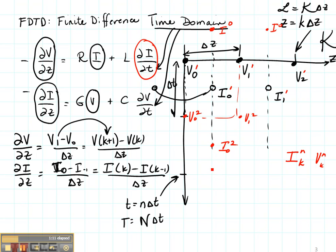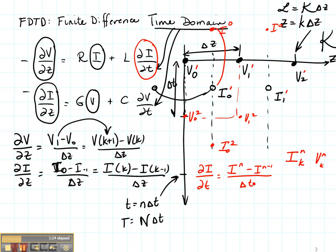So let's do the derivative of the current as a function of time. Right here, that's going to be I at N minus I at N minus 1 divided by Delta T. Now let's see where that derivative shows up — it shows up right there where my voltages are. Fortunately, the time for the voltage and the time for the derivative of the current show up at the right time.